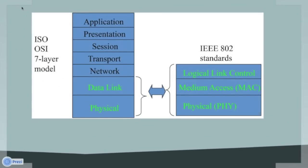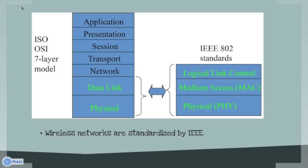Now, how and where does IEEE standards play a role in standardization of wireless networks? It is standardized and formulated by the 802 LAN and MAN committee. As seen from the figure, standards are defined only for the first two layers of the OSI model, i.e., the physical and the data link layer. For simplicity, they have been further classified into LLC (logical link control), MAC (medium access control), and the physical layer.